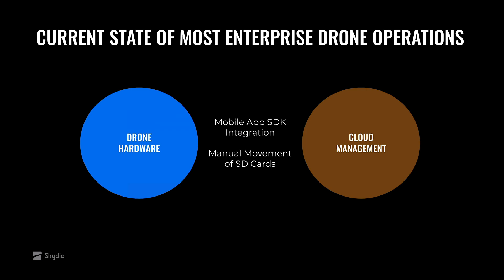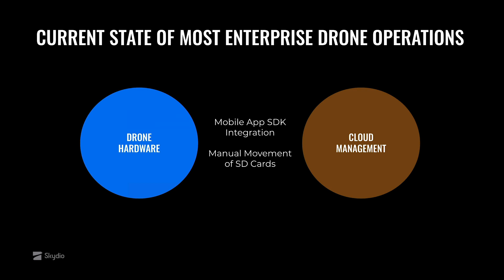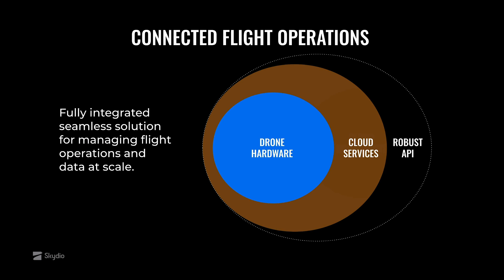In order to unlock the power of drones for use at scale, we really need to move to a world where our flight operations are truly connected to a platform that will enable users throughout your organization to collect the data they need, to effectively search through it, and to share it within your organization. In the world of connected flight operations, drone hardware is seamlessly integrated with cloud services, and data flows fluidly through your organization, including through a set of robust APIs, powering integrations with the business systems that you leverage, providing a fully integrated, seamless solution for managing flight operations and data at scale.